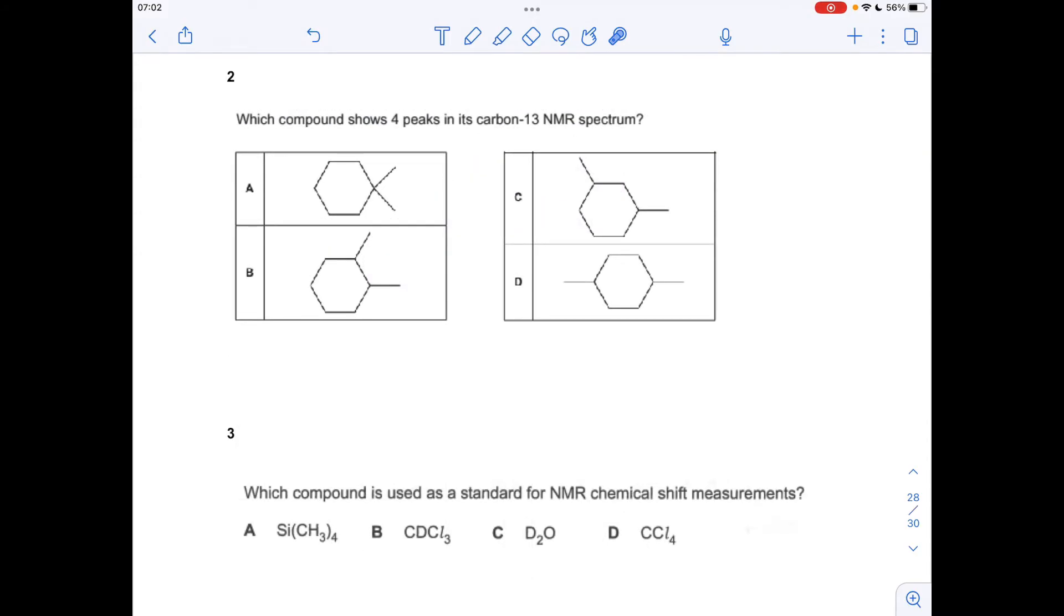Question two: which compound shows four peaks in its carbon-13 NMR spectrum? Again, we're looking for symmetry. The first one has a line of symmetry there, so one, two, three, four, five, so it's not A. For B, we've got a line of symmetry there, so that makes these equivalent: one, two, three, four, right. So we've got it, it's the answer.